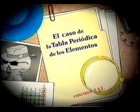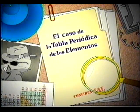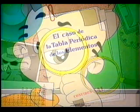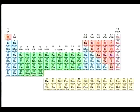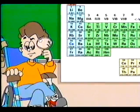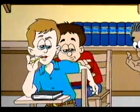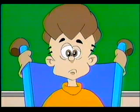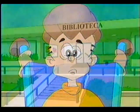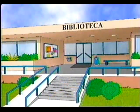El caso de la tabla periódica de los elementos, Sherlock Holmes. Sherlock cree que la tabla periódica de los elementos es un caso misterioso, digno de investigación. Está tan seguro de resolverlo que les ofreció a sus compañeros explicar a la clase la tabla periódica, sin saber absolutamente nada sobre el tema.